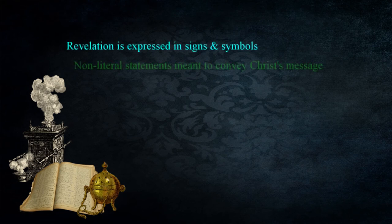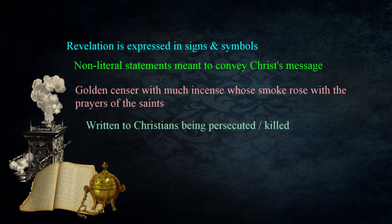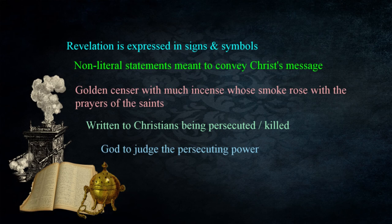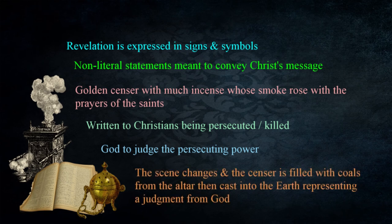This image is interesting as we explore the context of the passage. We know that the book of Revelation is expressed in signs or symbols — non-literal statements meant to convey Christ's message. In this reference we see a golden censer with much incense whose smoke rose with the prayers of the saints. The book was written to congregations in a region where persecution was increasing and some had already died as a result. One of the messages in the book was that God would judge the persecuting power and reward it for its evil. Here we see incense rising before God just as in the most holy place, and with it are the prayers of the saints who struggle to remain faithful in spite of extreme hardship. The censer is then filled with coals from the altar and cast into the earth, representing a judgment directly from the presence of God.